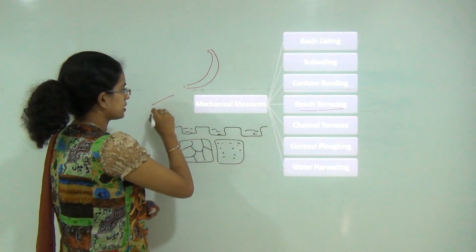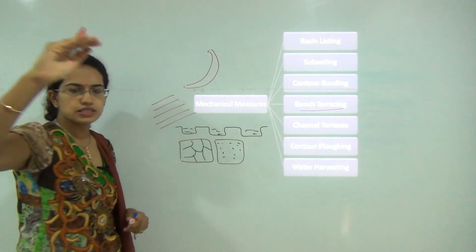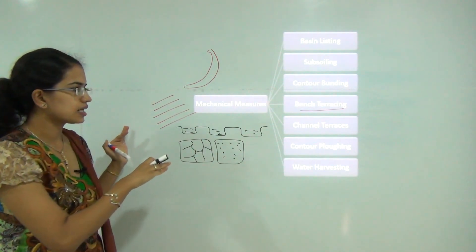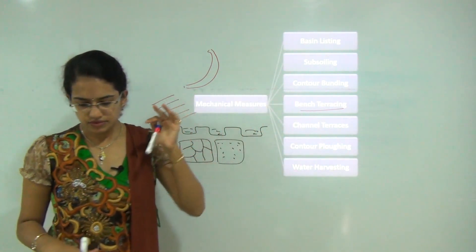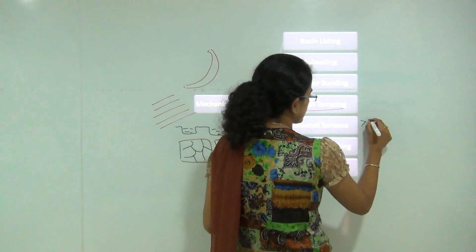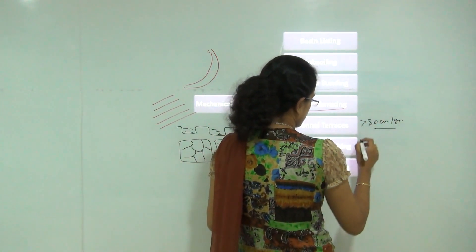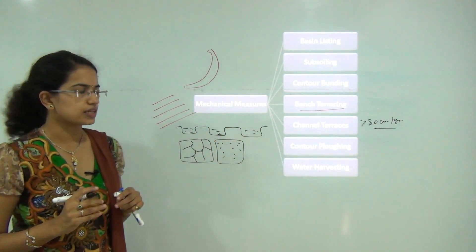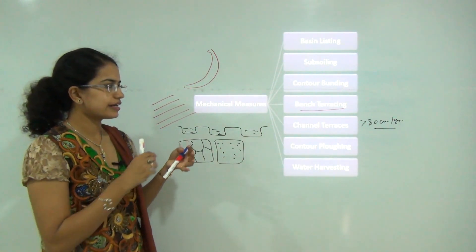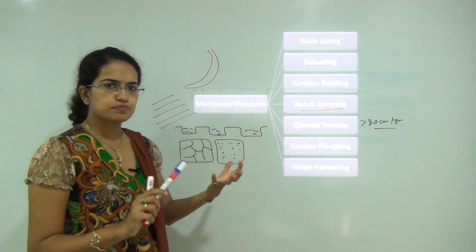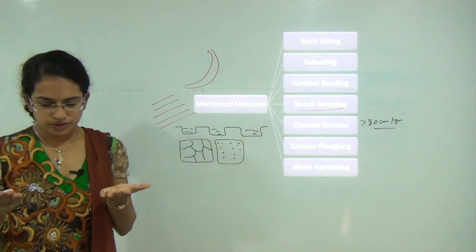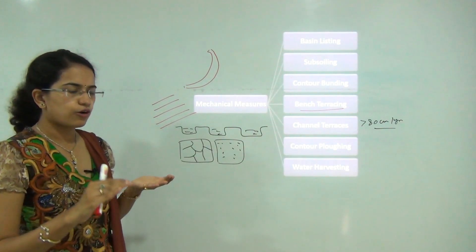Bench terracing, also known as terraced farming, means farming in benches or stages and is common in hilly areas. Channel terraces are usually found where the rainfall is more than 80 centimeters per year but the requirement is less than 80 centimeters per year. Channels of water are created on the lower edges and help prevent soil erosion. Contour plowing means plowing across the slope of elevated land.